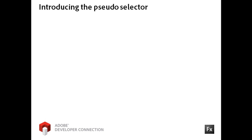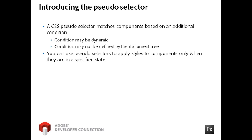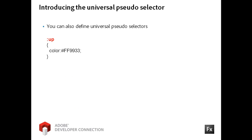A CSS pseudo-selector matches components based on an additional condition. The condition might be dynamic and might not be defined by the document tree. Pseudo-selectors are commonly used to apply styles to component states. This code shows a pseudo-selector for both the button-up and the button-down states. Note that you can also define universal pseudo-selectors — this code applies the same color text to all components that are in an up state.